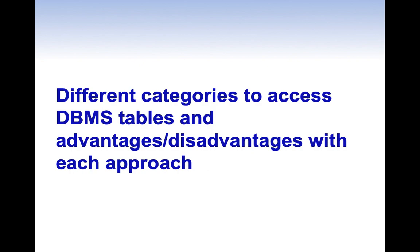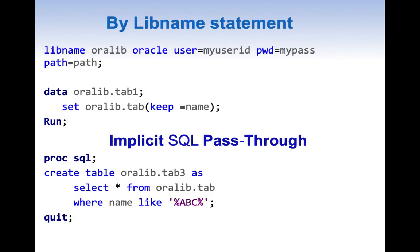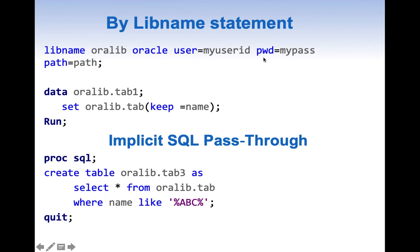Now let us discuss different categories to access DBMS tables and the advantages and disadvantages of each approach. We can use the same LIBNAME statement which we use for SAS to access Oracle tables or any database. In our example let us use Oracle. The LIBNAME for a database is not very different — you need to specify the engine of the DBMS, in this case Oracle, and then provide user, password, and path credentials. This information is generally given by an admin or manager.